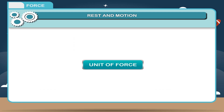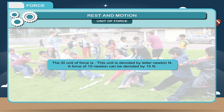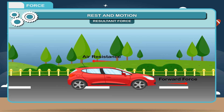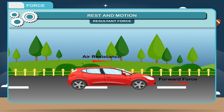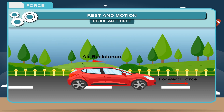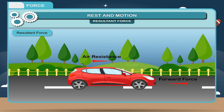Unit of force: The SI unit of force is Newton, denoted by the letter N. A force of 15 Newton can be denoted by 15N. Resultant force: When a number of forces are acting on a body, their effects can be expressed by a single force. This force is called the resultant force.